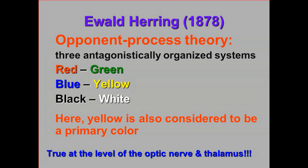But here's the opposing view. Ewald Herring argued for opponent process theory, based on the idea that there are three antagonistically organized systems in the nervous system: red-green units, blue-yellow units, and black-white units. According to Ewald Herring, it's not just three primary colors — there are four primary colors. Yellow is an additional primary color, according to opponent process theory.